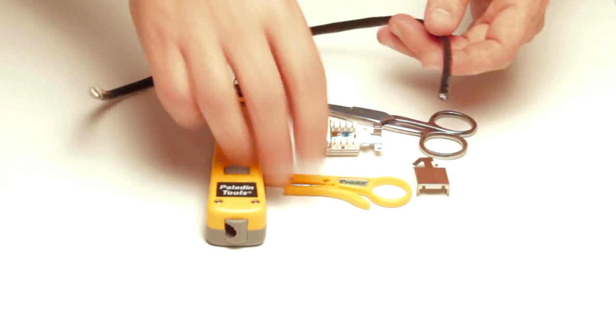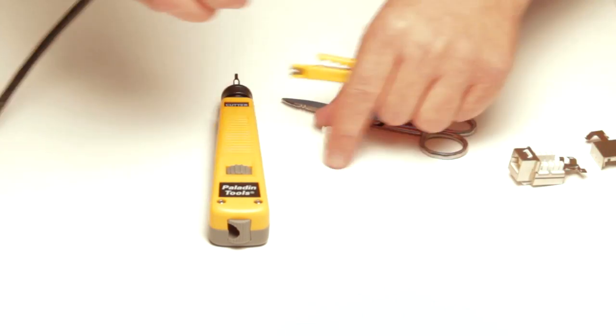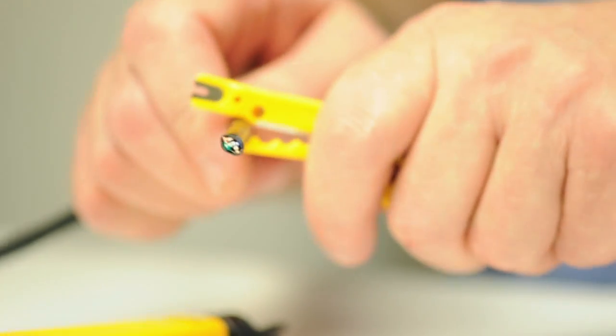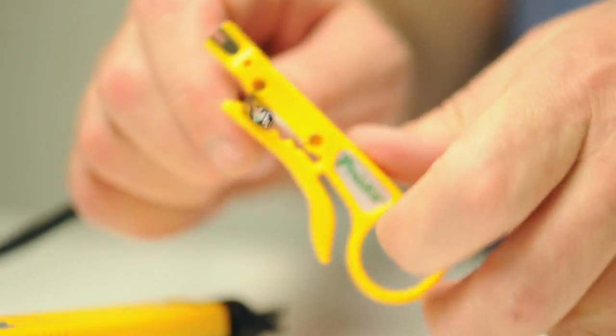The first step in installing a jack is to strip back the outer jacket. Using a rotary cable stripper, I can quickly remove the jacket.